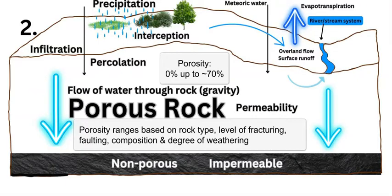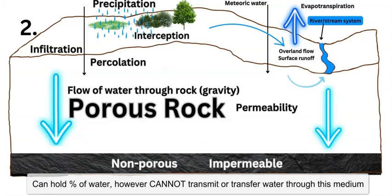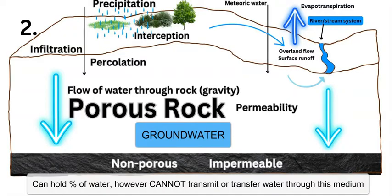Limestone in a karst environment is a very porous rock with the ability to hold, transfer, and transmit a lot of water. At the bottom of the diagram is a non-porous layer of rock which is impermeable — it may have some porosity but cannot transmit water because the voids are not connected, so any water that gets in cannot flow through. This acts as a barrier to water flowing deeper into the crust, so the porous rock above holds a certain amount of water — this is what we call groundwater.